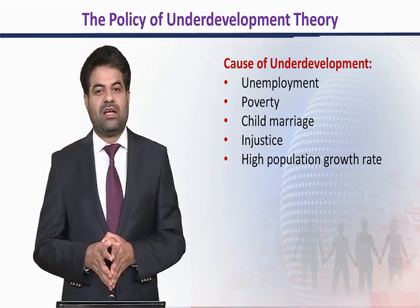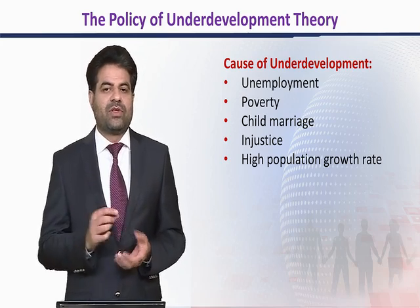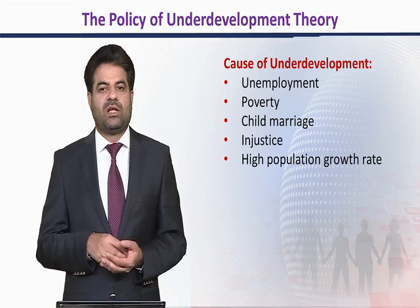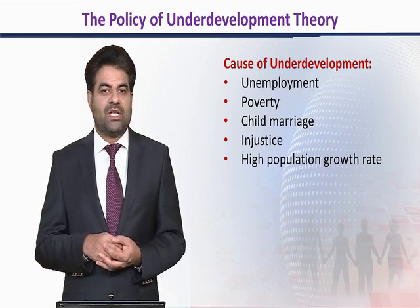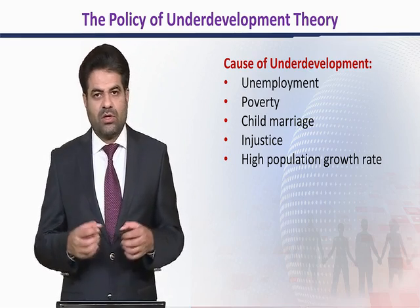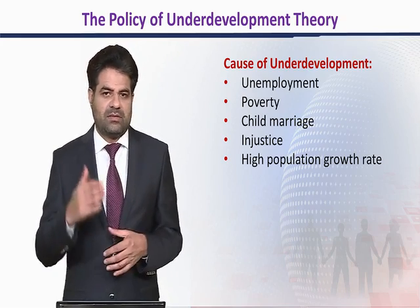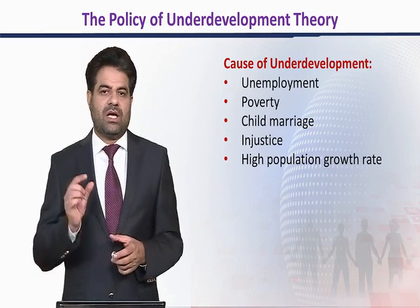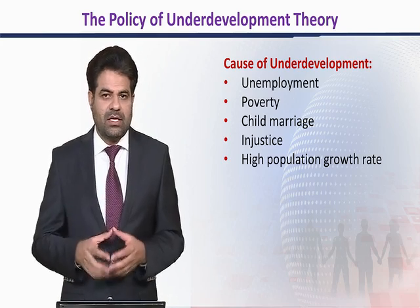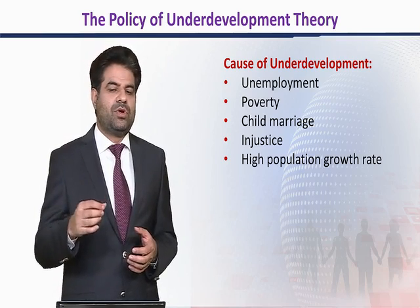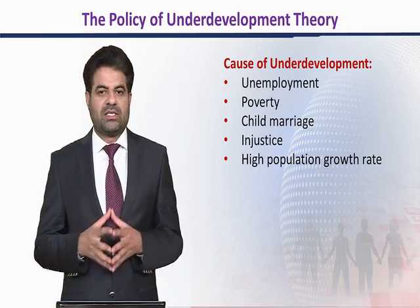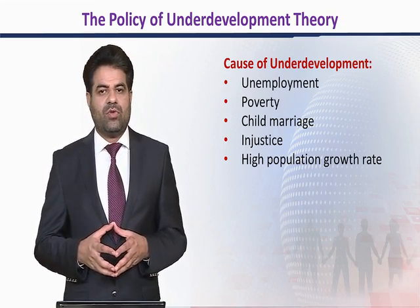Child marriages are a social cause of underdevelopment that requires legal action. A society where child marriages occur is considered underdeveloped, because children being married at a young age face many difficult situations. Injustice in society is another cause — when the justice system protects only the few elites and the rest of society cannot equally access justice institutions, development is undermined.